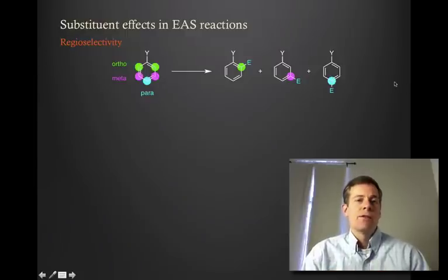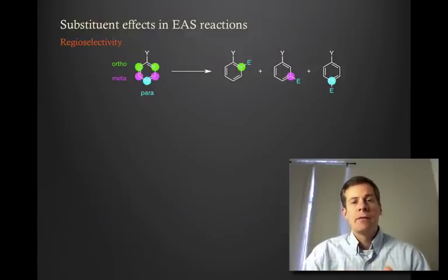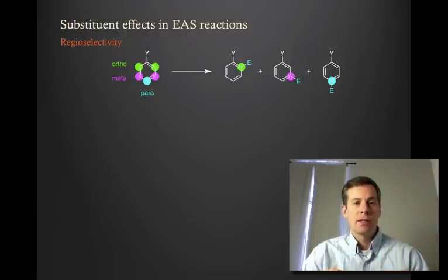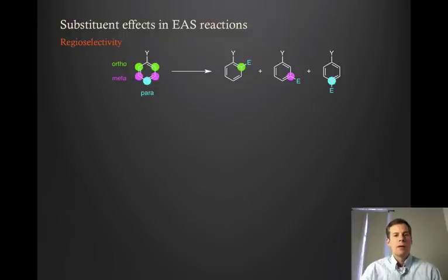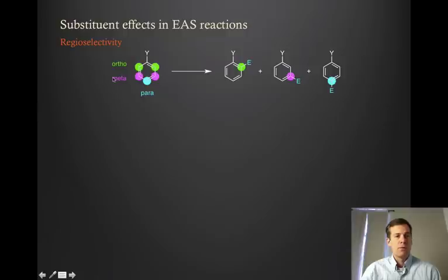Now we understand the impact that substituents can have on the reactivity of the aromatic ring. What we want to do now is understand how substituents will impact the regioselectivity of a reaction on a substituted benzene. To begin with, we need to define some terminology. Here I show a monosubstituted aromatic ring with just some generic Y substituent. We're going to refer to the positions on the aromatic ring relative to that substituent by the names ortho, meta, and para.